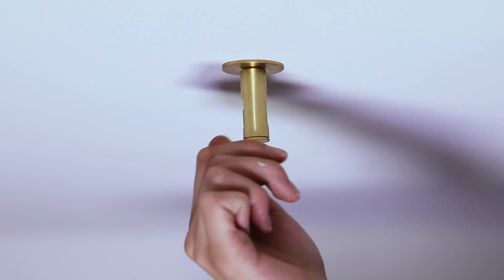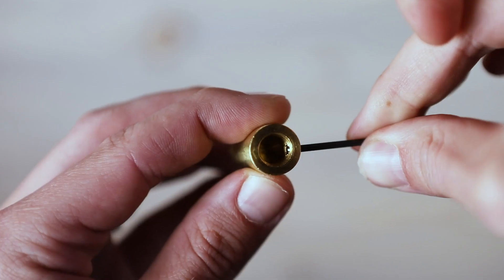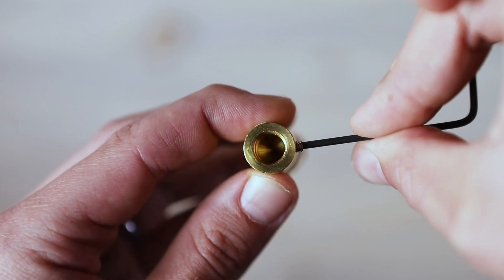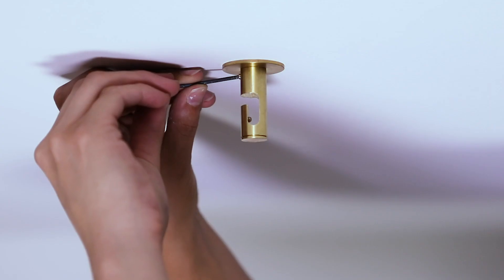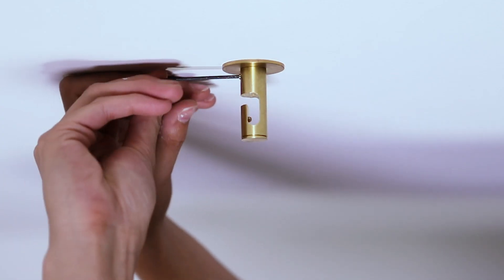When threading the Swag Hook onto the back plate, make sure that the set screw is fully loosened to avoid interference with the back plate threading. Then take your Allen Wrench and secure the Swag Hook to the back plate.